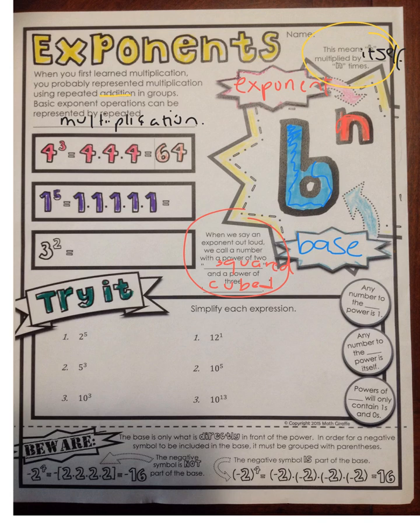Going back to the repeated multiplication, 4 to the third power — 4 cubed — is simply 4 times 4 times 4, which is 64. This 3 tells you to multiply the base, which is the 4, by itself 3 times.